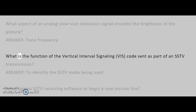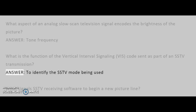What is the function of the Vertical Interval Signaling (VIS) code sent as part of an SSTV transmission? Answer: To identify the SSTV mode being used.